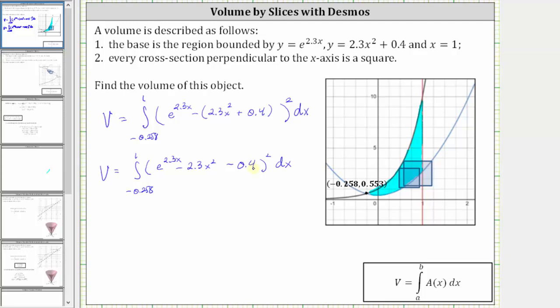Notice if we were doing this by hand, we would now have to square this, determine the antiderivative, and then find big F of one minus big F of negative 0.258, which should be very messy, and therefore we are going to evaluate this using Desmos.